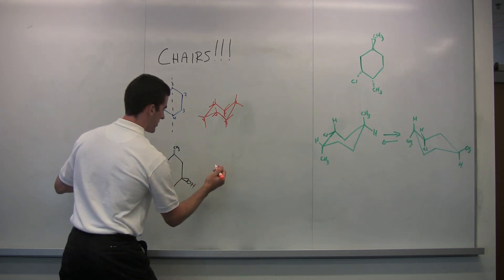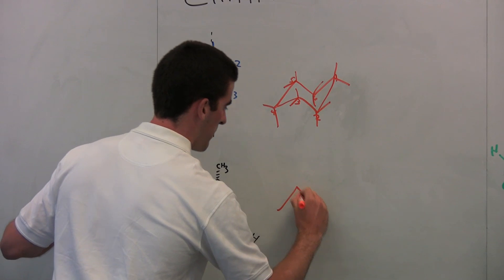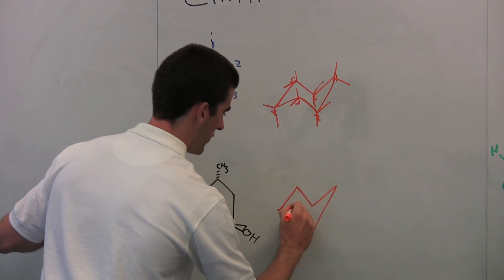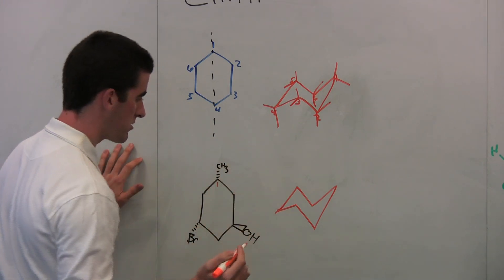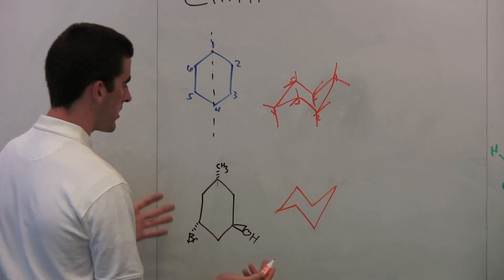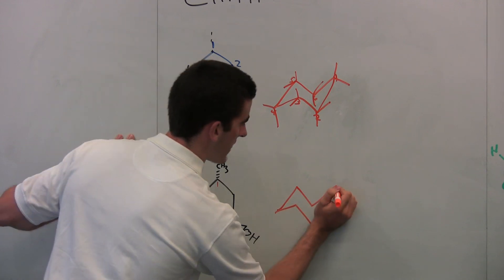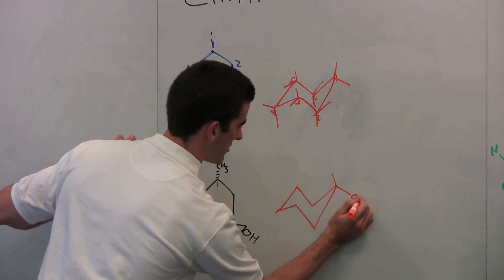So again, we have our example here. Let's just draw it out like we did. Mountain, valley, mountain, and then back. You'll get good at it over time. It's kind of tricky at first. So our first position here, we're going to name this position one. It'll be one up here. We need to draw out the CH3 down. That's our equatorial. So CH3 is there.